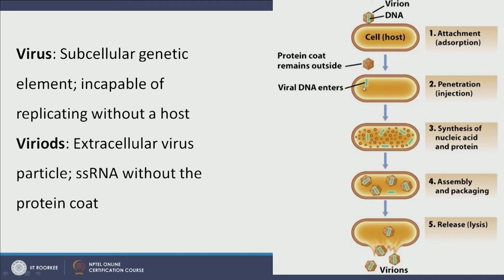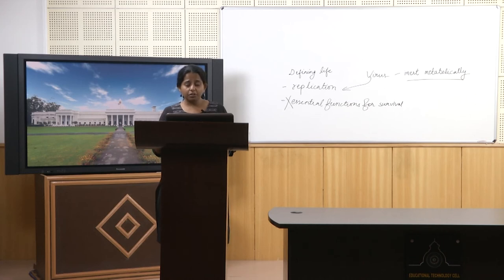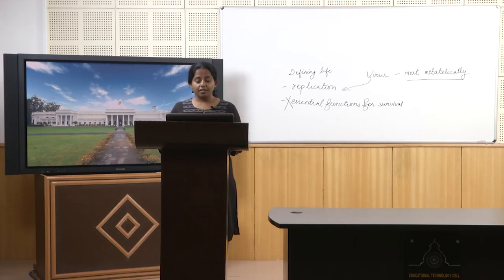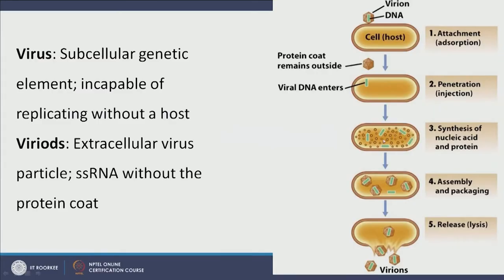Once the viral DNA is injected inside the host, it is transcribed and translated. Since this is a DNA virus, mRNA is first made from it, then converted into capsomere proteins that will form the capsid coat. Eventually the cell is full of virions, and then these virions are released after breaking the cell. This is basically viral infection — when you have a viral flu, something like this is happening inside your body. Because we are eukaryotic organisms, viral infection looks slightly different.